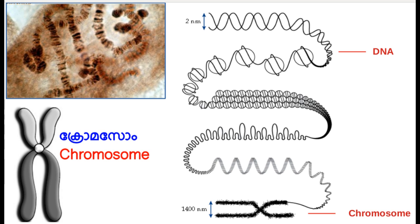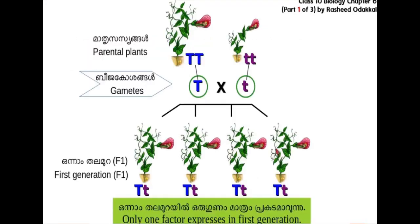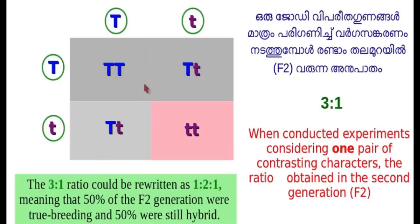When Gregor Mendel conducted experiments considering one pair of contrasting traits, only one trait is expressed in the first generation, while the other remains hidden. The expressive character is known as the dominant trait and the hidden one as the recessive trait. The trait which remains hidden in the first generation appears in the second generation, and the ratio of the dominant and recessive traits in the second generation is always 3:1.